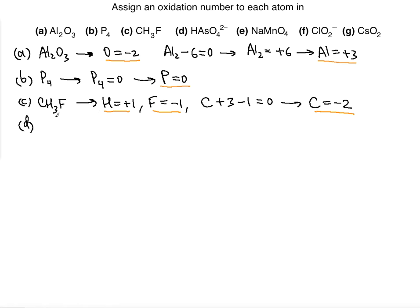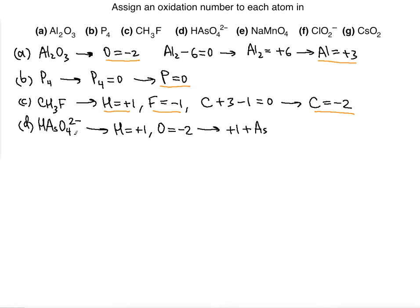Part D is HAsO₄²⁻. Note that the overall charge is minus 2 — this is an ionic compound, so we set the equation equal to negative 2, not 0. Hydrogen takes precedence, starting at plus 1. The next rule that follows is for oxygen, which is minus 2.